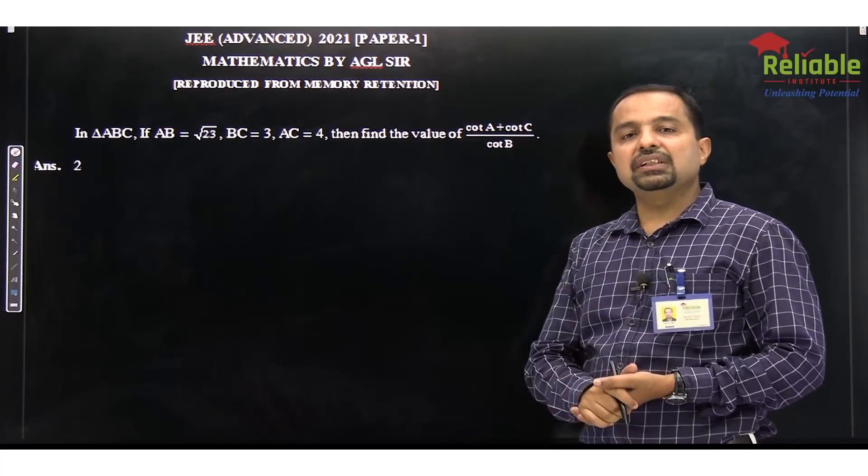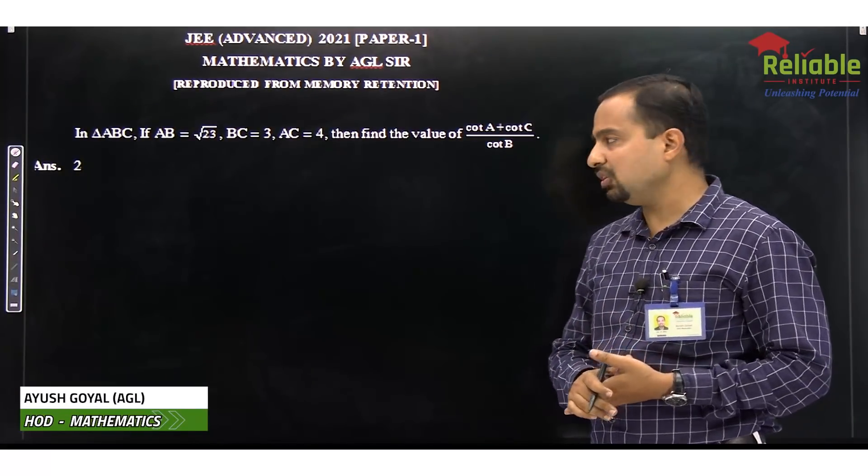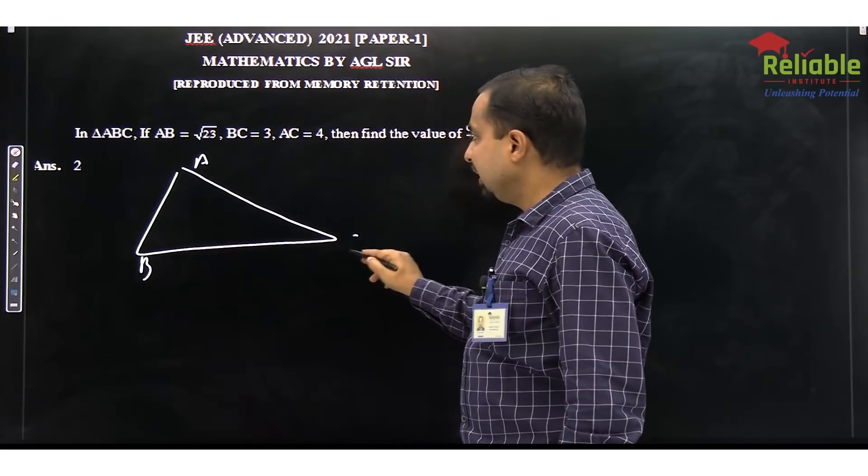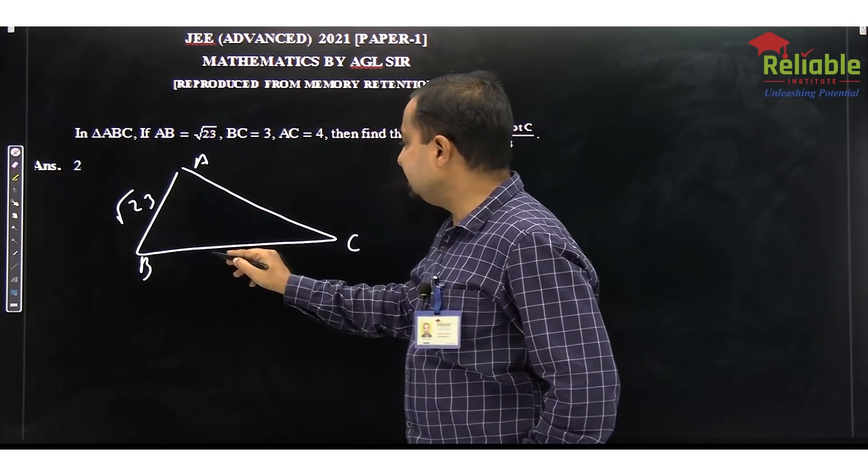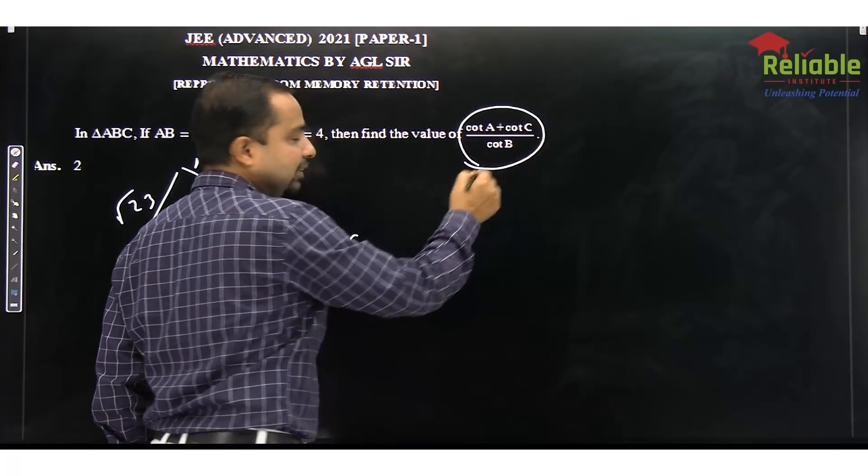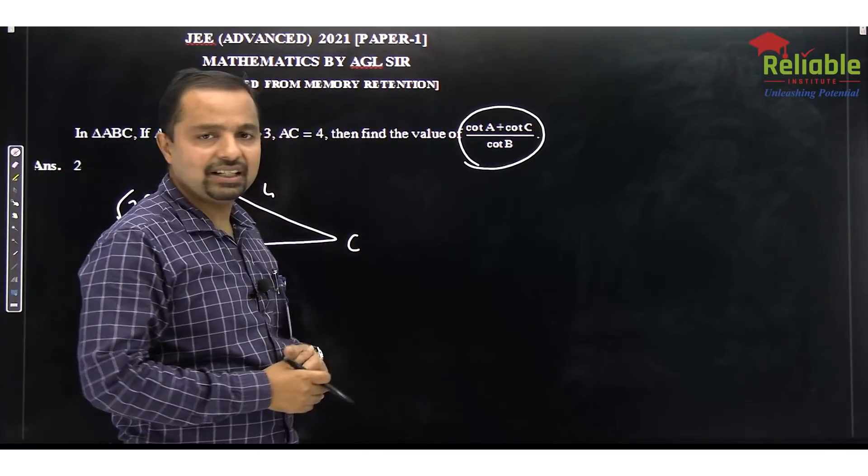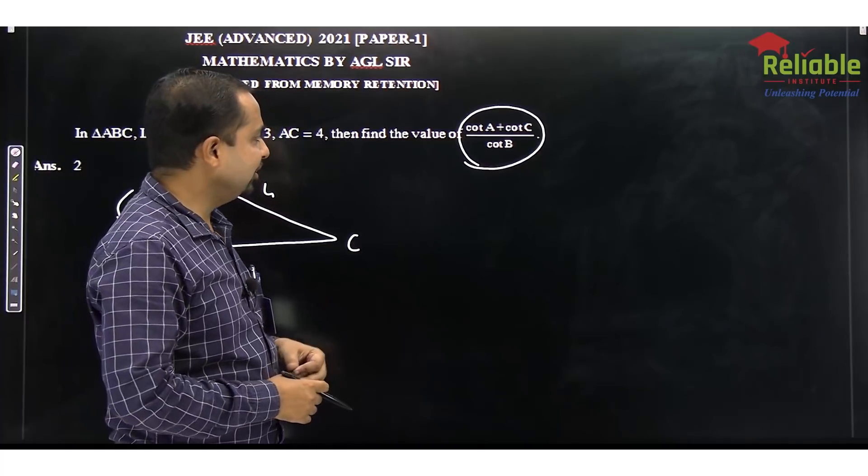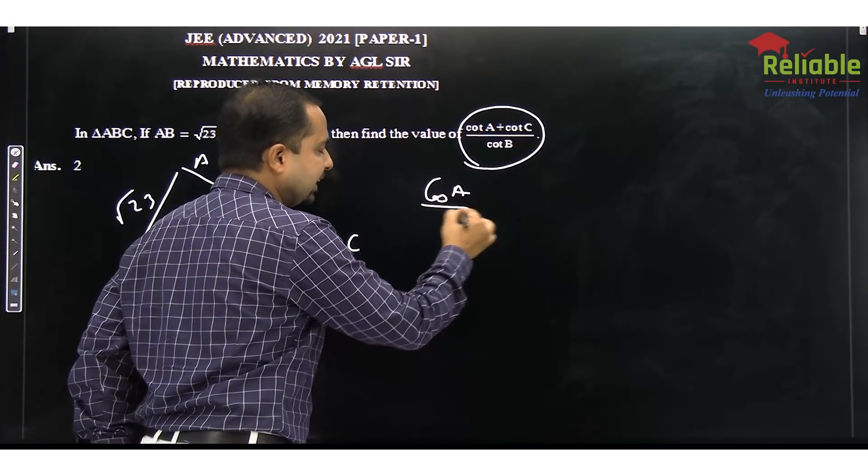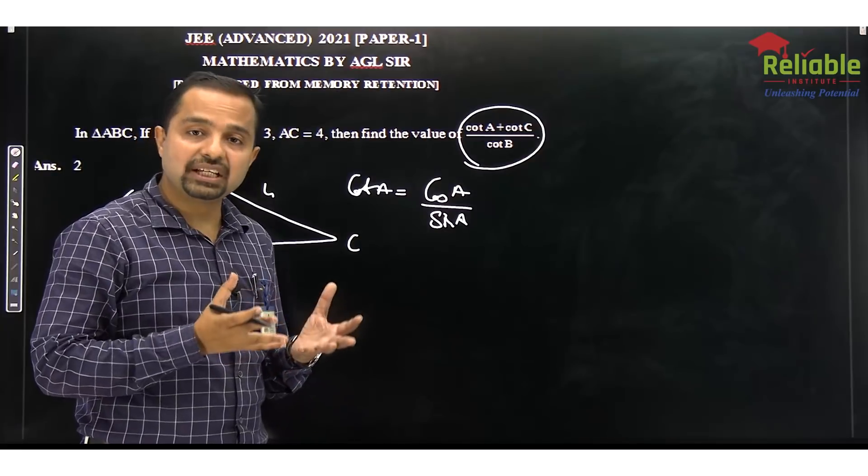Next question was the solution of triangles in which you had 3 sides and you asked cot A plus cot C upon cot B. Just let me make a rough diagram over here. A, B, C. AB was root 23, BC was 3, AC was 4. This is, if it is not readable, it is cot A plus cot C upon cot B. I will be given some IIT, some aspiring IITians. This is a set formula based question.